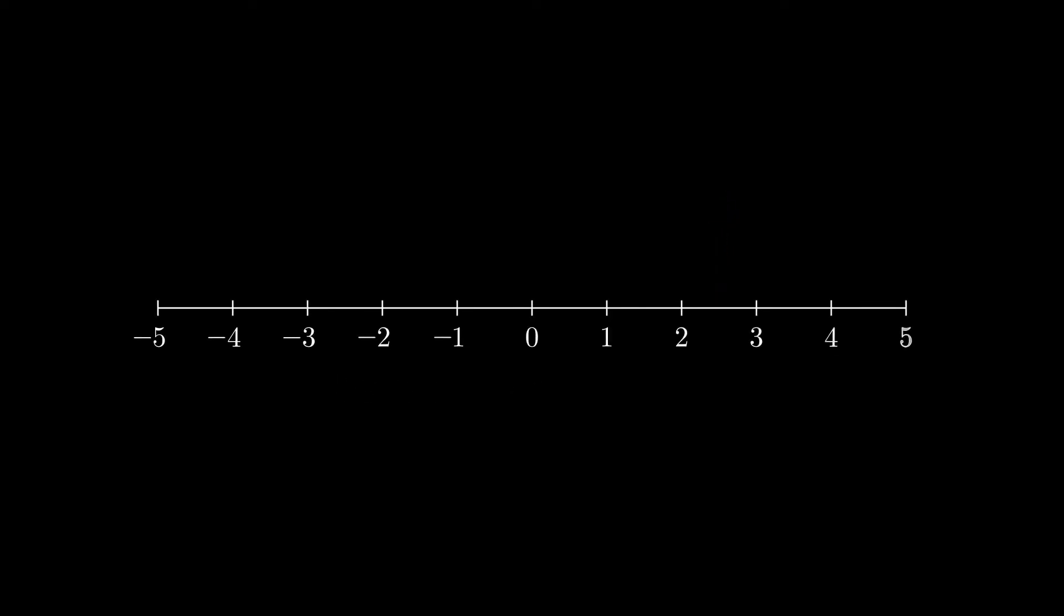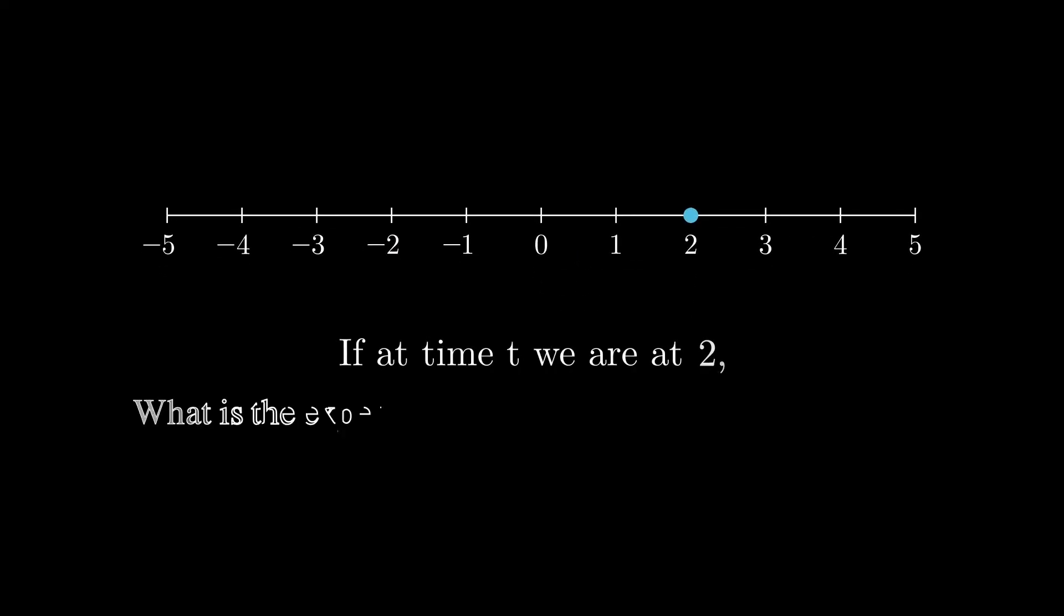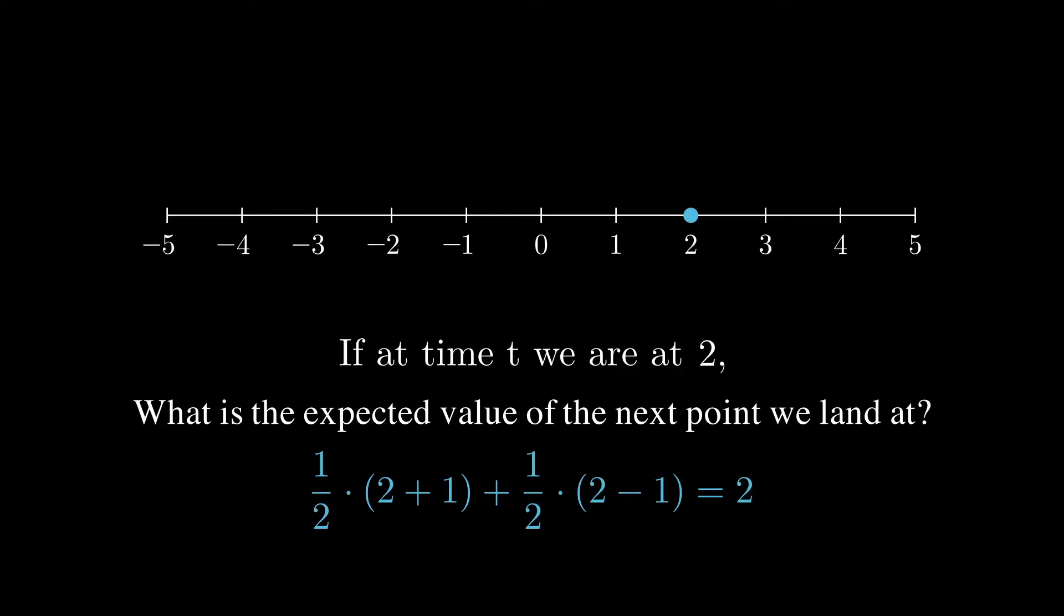Let's go over another example. We have a random walk, where we start at 0, and we go up and down with half probability. Now the question we want to ask is that if we're currently on 2, what is the expected value of the next point we land on? Hopefully, you can see that this calculation is quite simple. I have it right here.